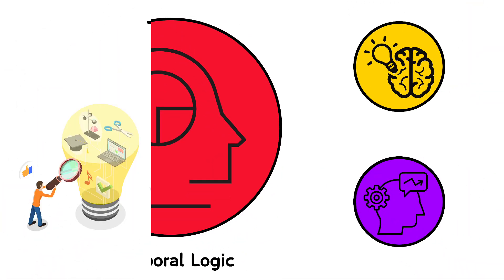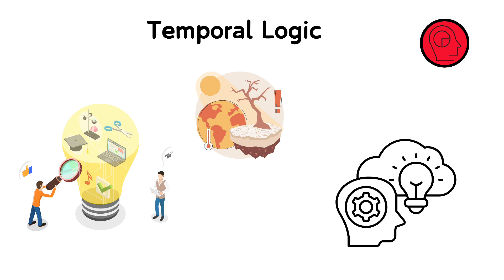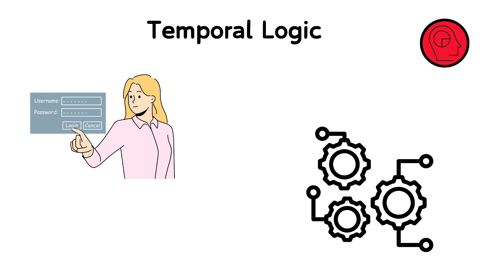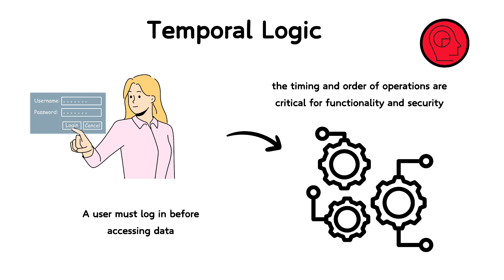Temporal logic deals with propositions in the context of time, focusing on sequences of events and their conditions. It's used to reason about statements like eventually, until, or during. This logic is crucial in computer science for specifying and verifying the behaviors of systems over time. For example, in a software development context, temporal logic can express requirements such as a user must log in before accessing data, or data is saved after editing is completed. It helps in designing systems where the timing and order of operations are critical for functionality and security.